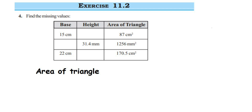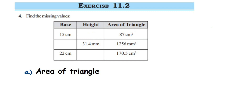Here's a question on Exercise 11.2 — the fourth question from the chapter on Perimeter and Area. A table is given with the base, height, and area of a triangle, and some values are missing. In the first one, height is missing; in the second, base is missing. We'll apply the formula to find the missing values.